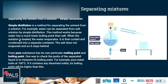What if we want to separate the solvent from the solution? Then we can use simple distillation. It is a method for separating the solvent from a solution. For example, water can be separated from salt solution by simple distillation. This method works because water has a much lower boiling point than salt. When the solution is heated, the water evaporates. The water vapor is collected, cooled, and condensed, and the liquid is then collected in a separate container. The salt does not evaporate and so it stays behind in the previous container.